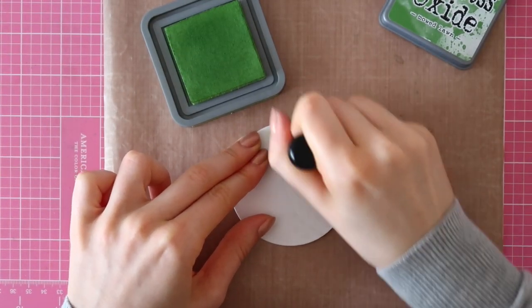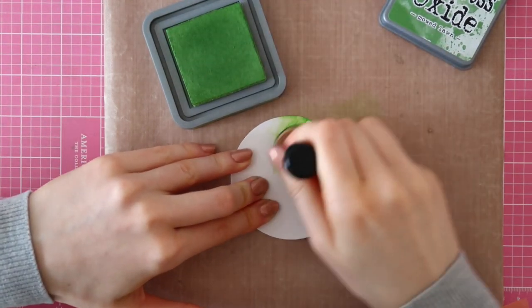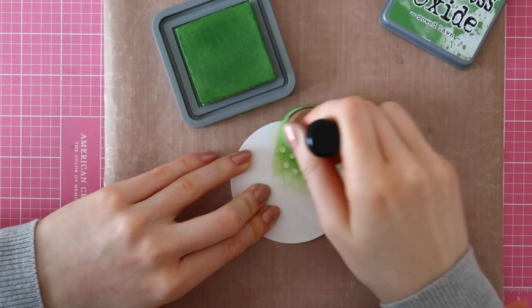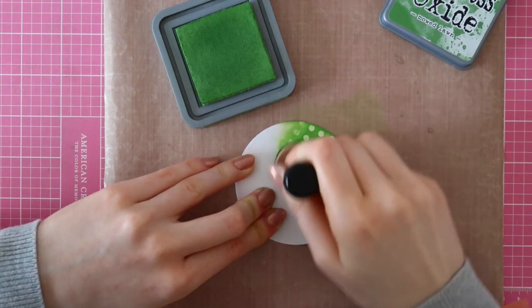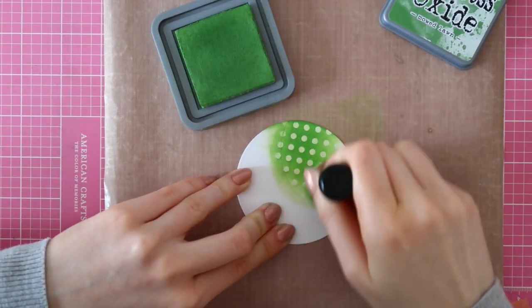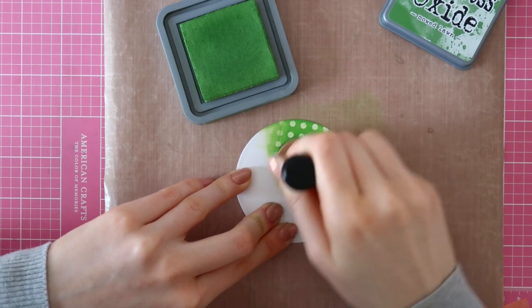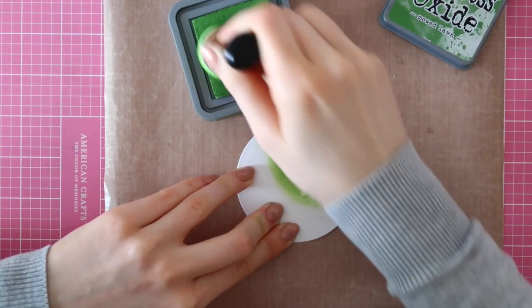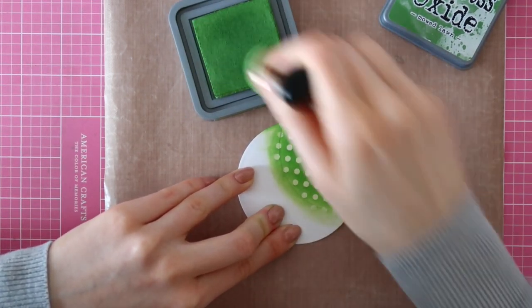I think it would also be really cool if you could use a lighter or a darker shade of green for your grassy border. That way you would end up with a tone on tone look and I think that would look really nice as well.